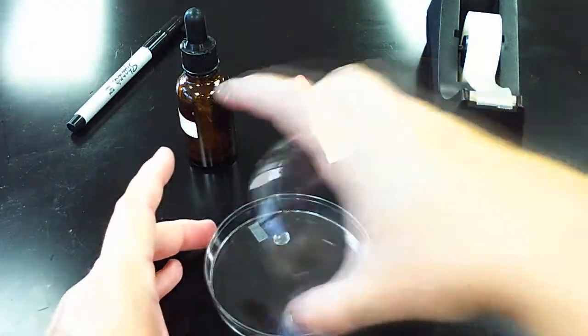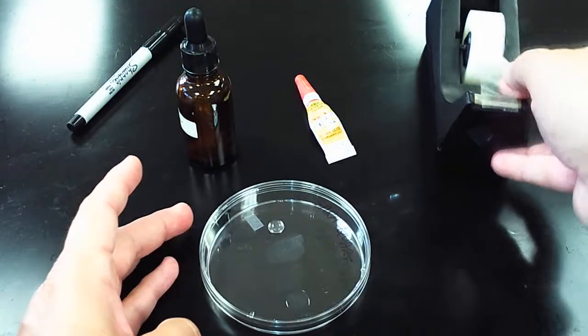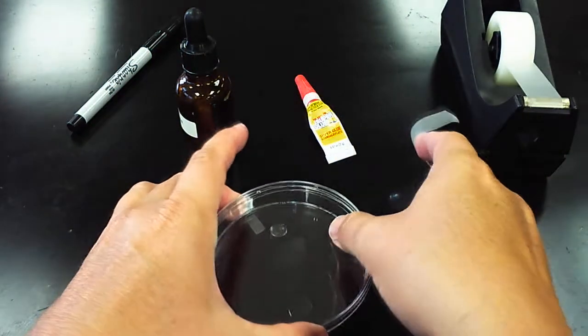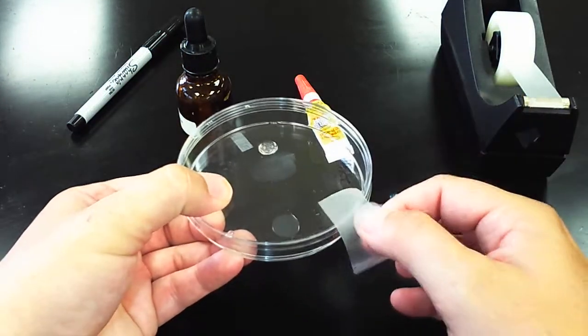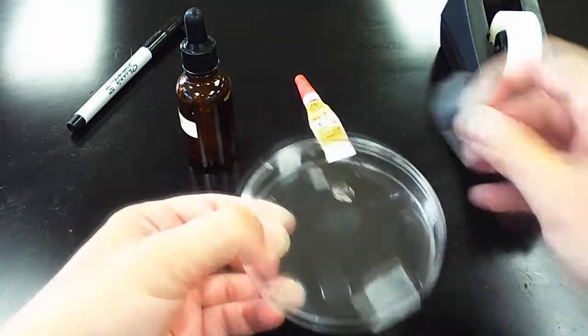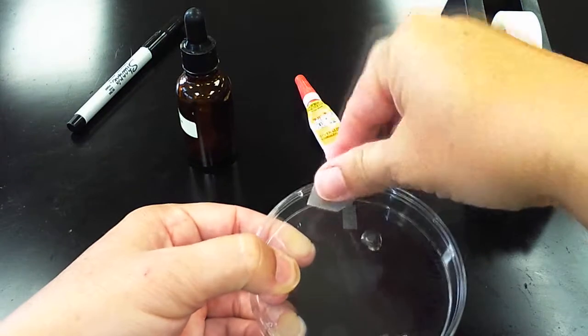Then immediately put the lid over top and take some tape to close it. I'm going to try and keep it flat so my super glue and water don't run together, and I'm going to tape my lid closed.